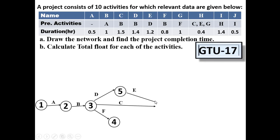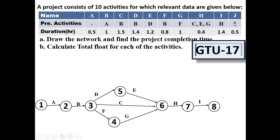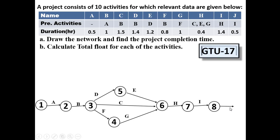E will start from there. I have merged C and E over here because C and E will merge at the end. Then after F, G will start. I have merged G as well because C, E, and G will merge, and then H will start. After H, I will start. After I, G will start. This is the activity-on-arrow network diagram, also called a network diagram by default.